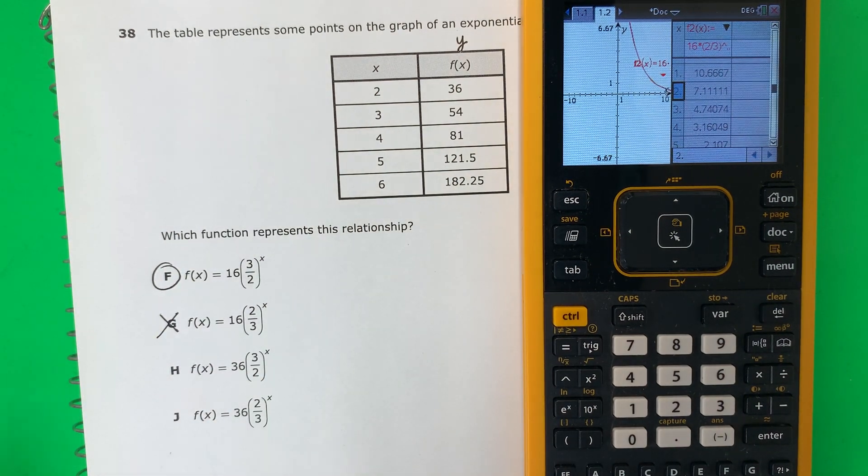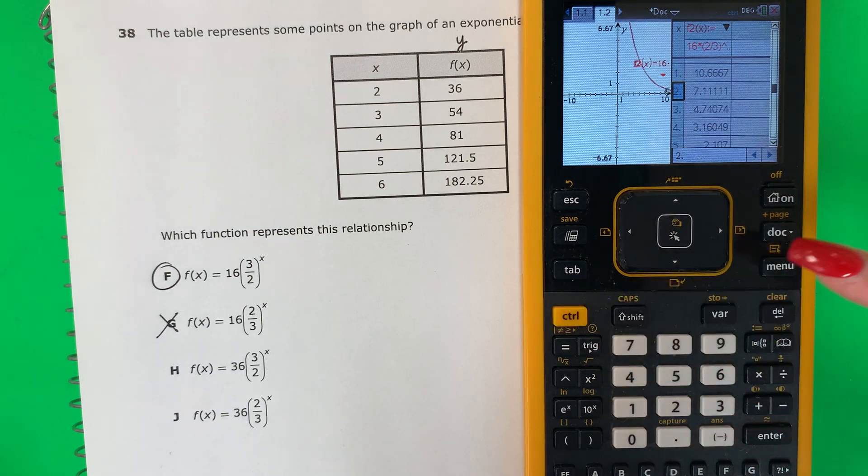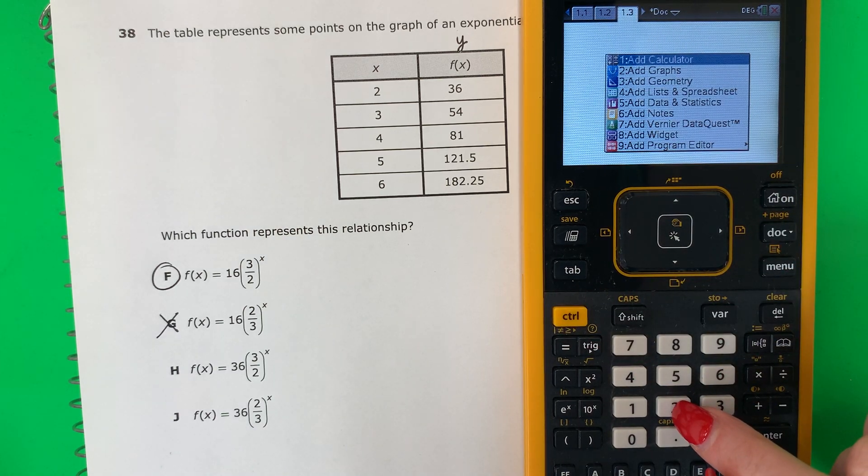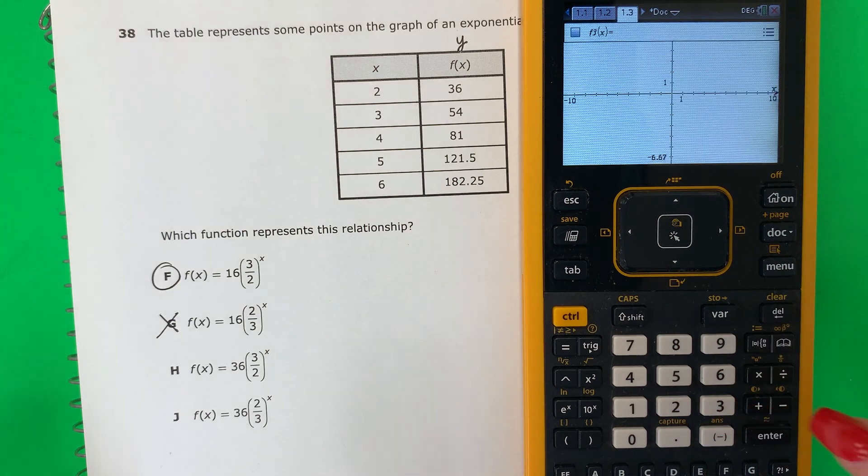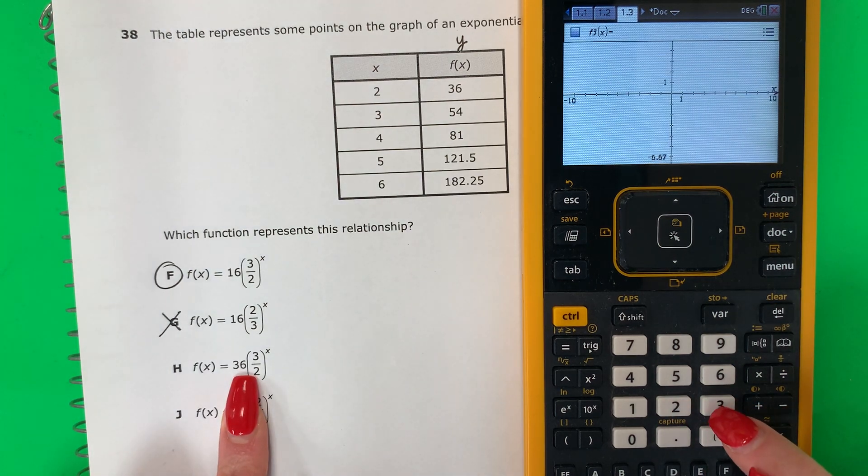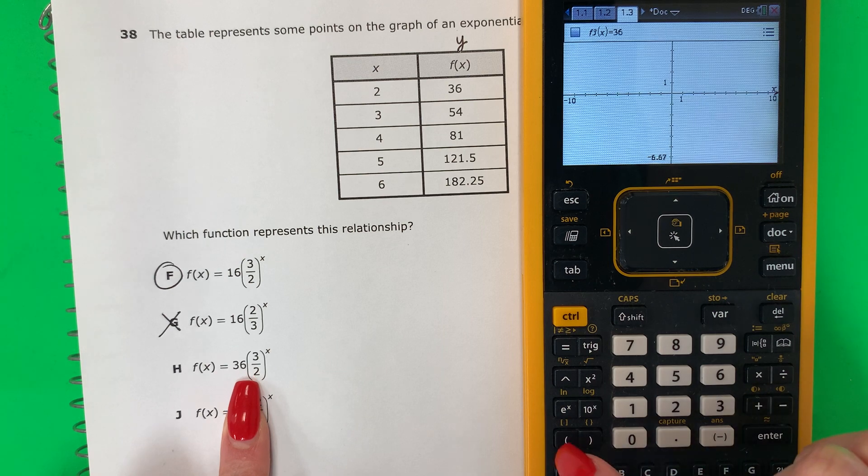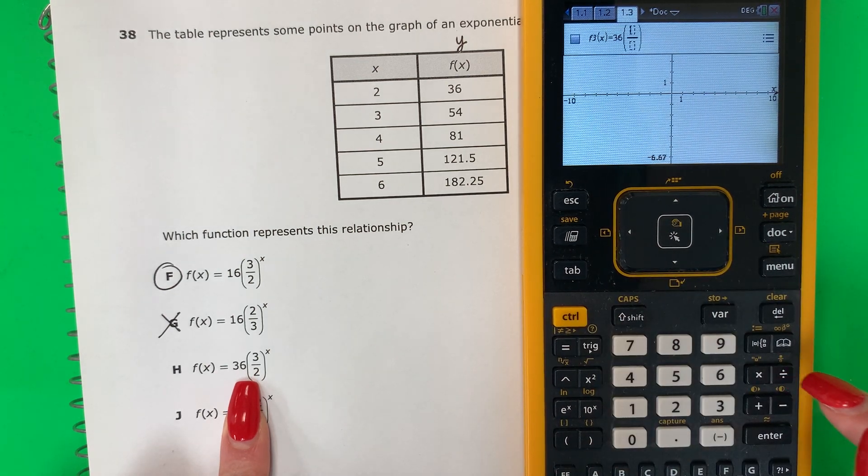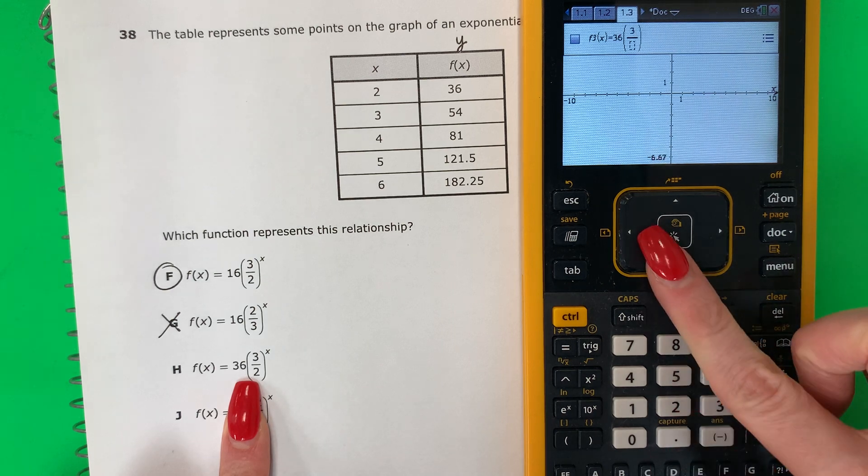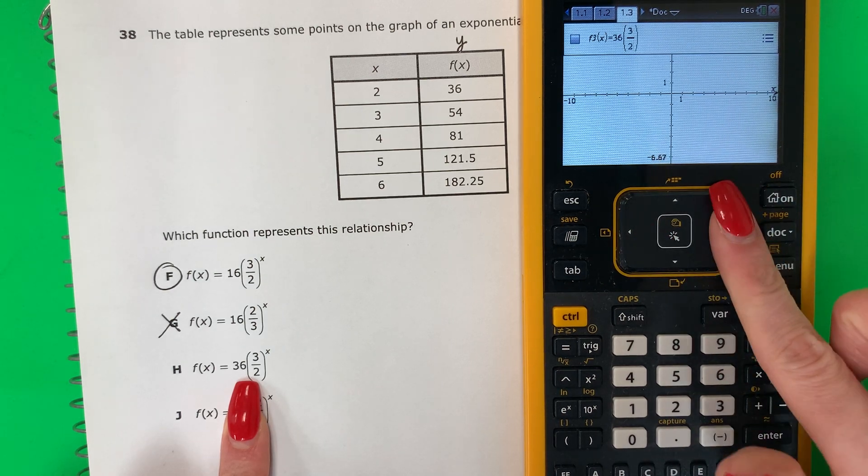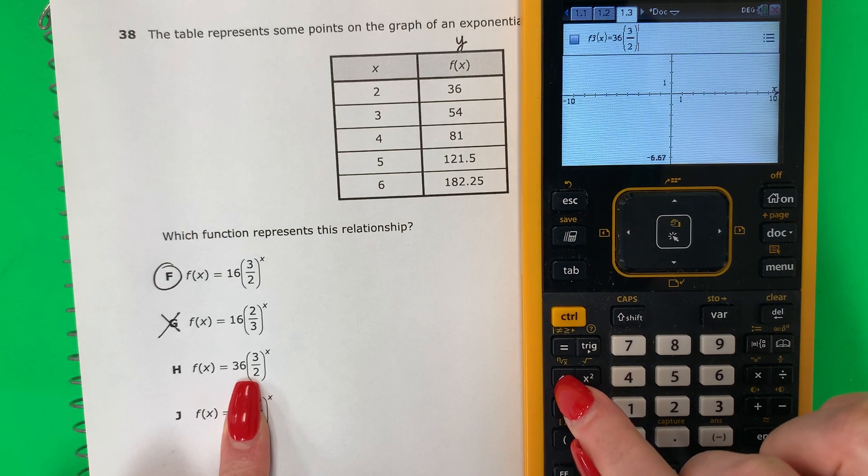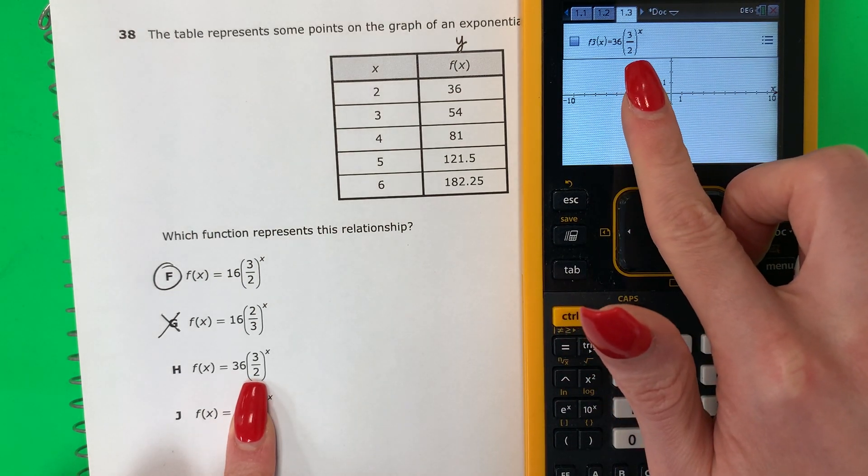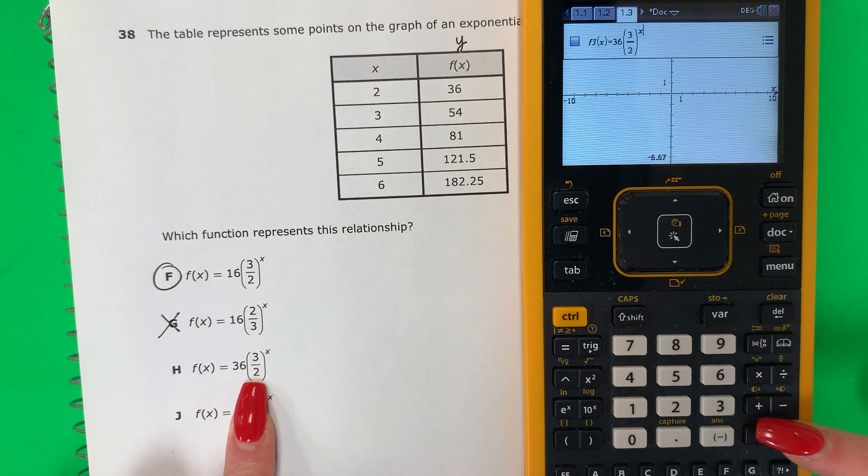Let's do a new page. Control, dock. 2 for the graph. Dos por la gráfica. We're going to go ahead and do 36. Parenthesis. Control, divide. 3. Down. 2. Right, right. Exponent. X. So I have my equation. My third equation. Push enter. Presiona enter.